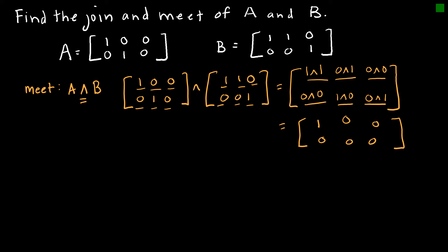Now let's take a look at the join. Remember, the join is A or B. So this one's a little bit more forgiving. This is 1, 0, 0, 0, 1, 0, and we're saying or 1, 1, 0, 0, 0, 1. And again, I'm going to show more work than I normally would. Normally, I would just go straight to the final answer. But if I were joining these together, I would say 1 or 1 and then 0 or 1 and then 0 or 0 and then 0 or 0.